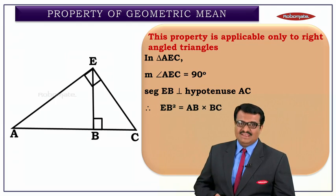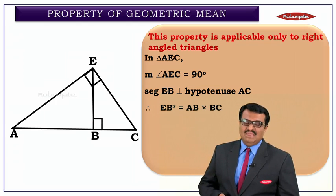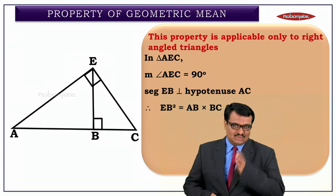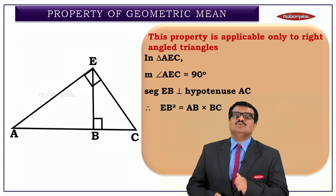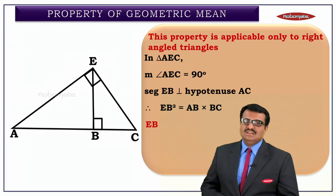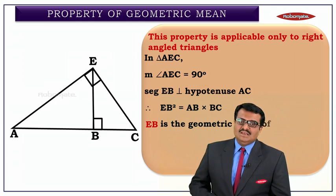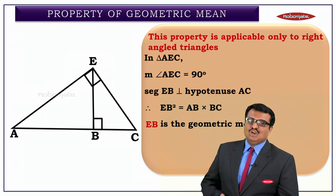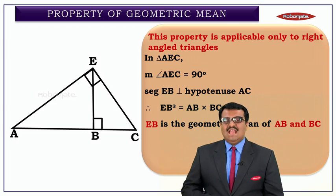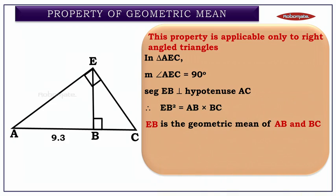So, EB² = AB × BC. EB is the geometric mean of AB and BC.